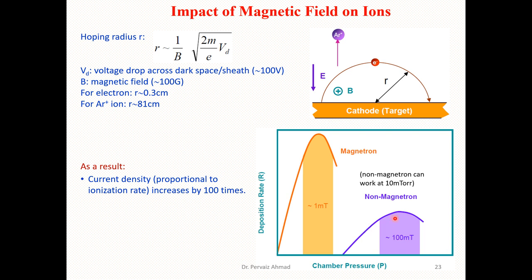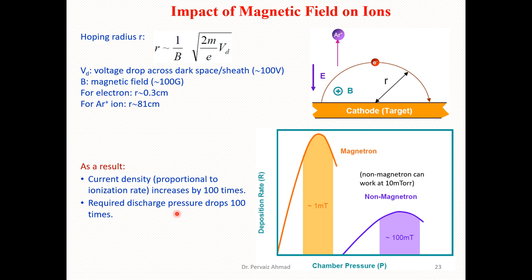Non-magnetron sputtering has a deposition rate at approximately 100 millitorr. Current density increases by 100 times, meaning that current density is proportional to the ionization rate. As a result, the required discharge pressure drops 100 times.